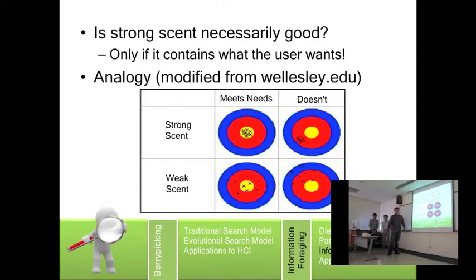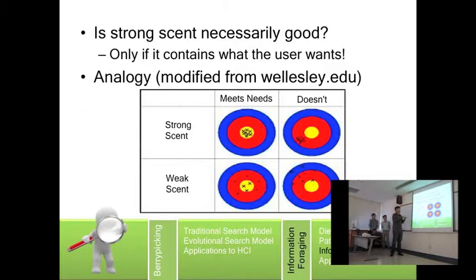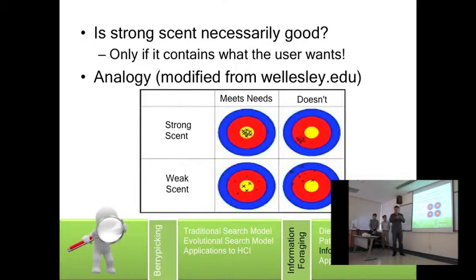To summarize this, we've come up with a table with two dimensions: first, whether you can find what you need; and second, what is the scent that leads you there. It's kind of like the precision and accuracy concept from high school science.